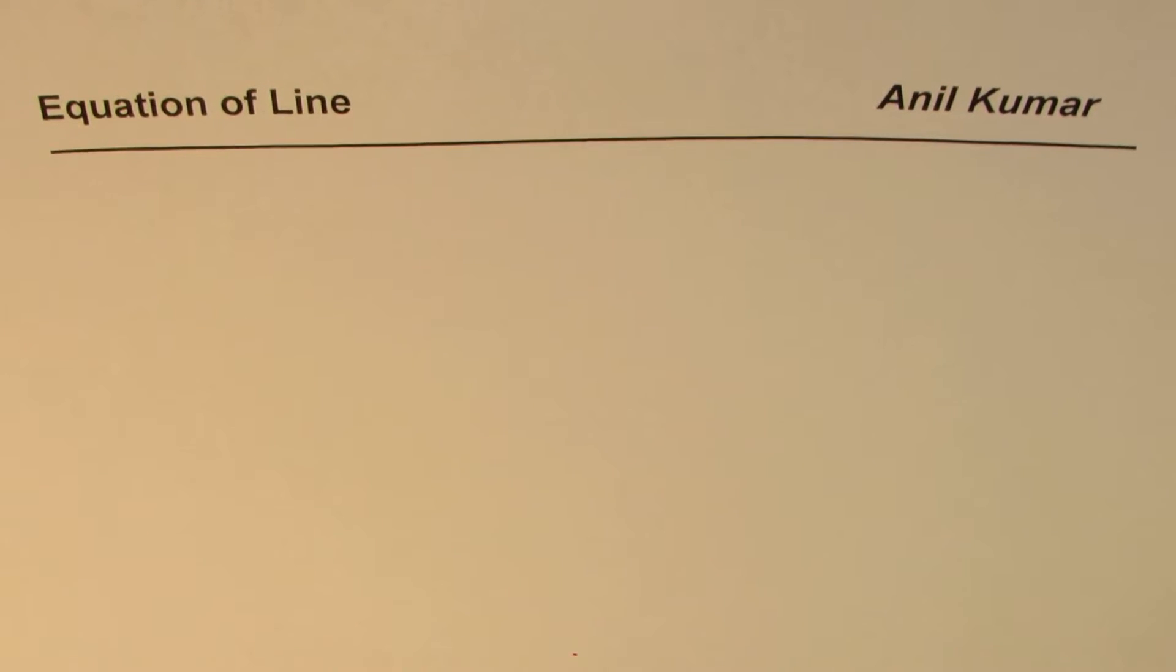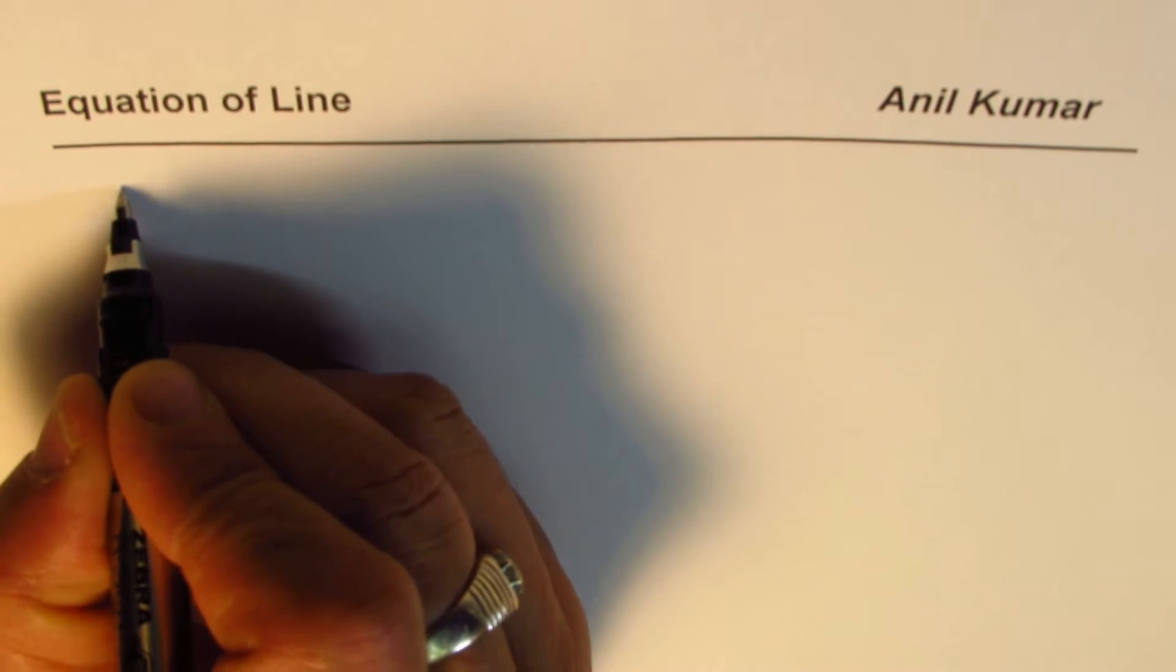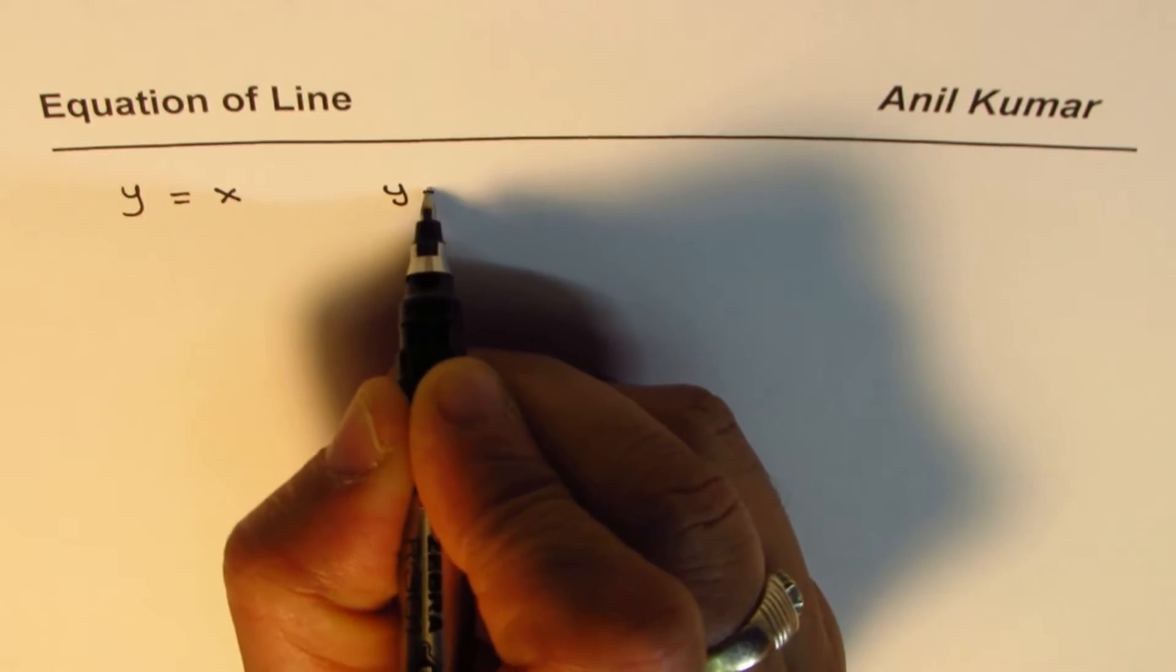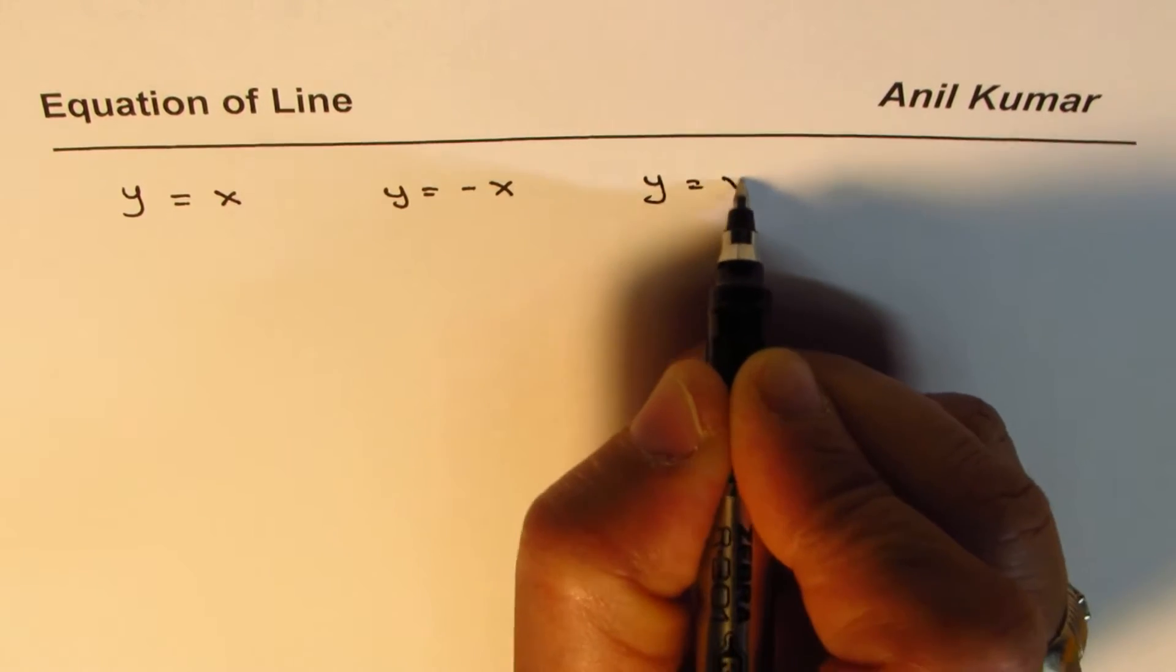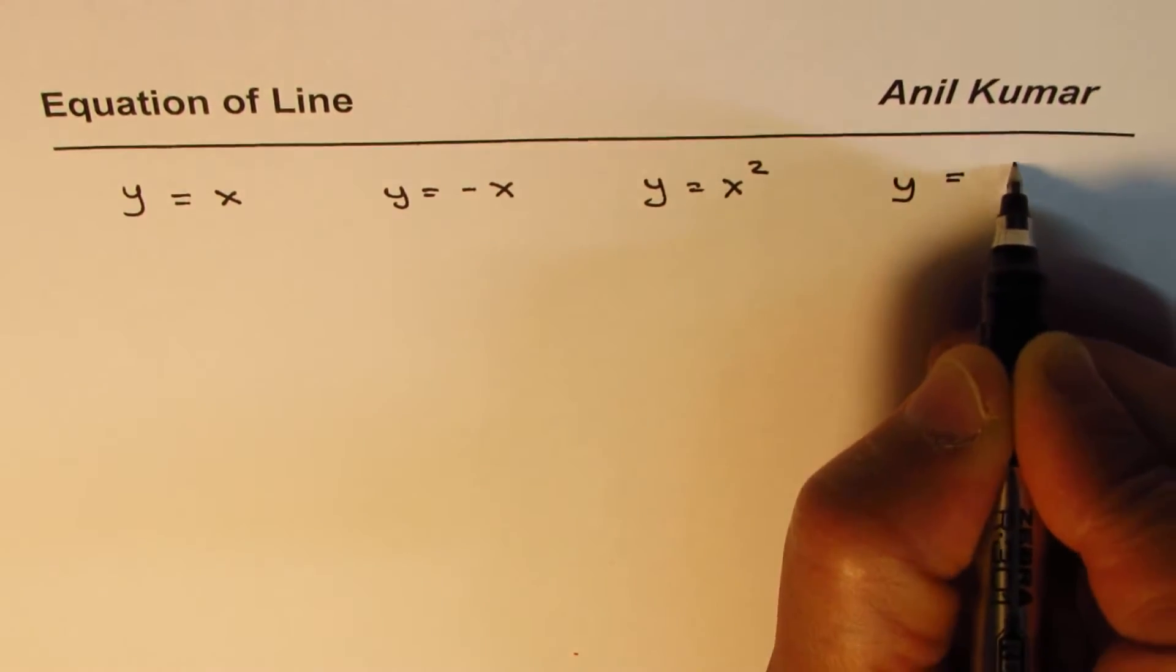I'm Anil Kumar, sharing with you a question from my subscriber who wants to know: we have a bundle of equations, and how to find which one represents a line and which one does not. Let me write down the equations. Y equals X was one of them, Y equals minus X, we had Y equals X squared, and we had Y equals 1 over X.